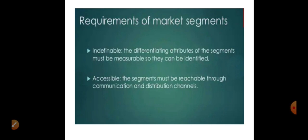When it comes to identifiable, it means the attribute you use to segment the market should be measurable. For example, if we divide the market on the basis of age — infants, teenagers, old aged people — age is a measurable item. When you divide the market on the basis of gender into male and female, it is measurable.